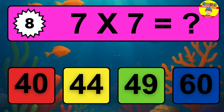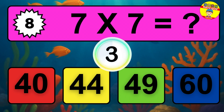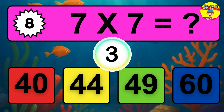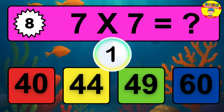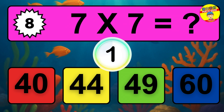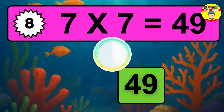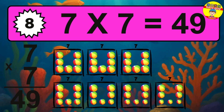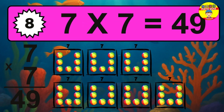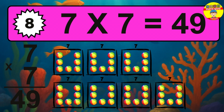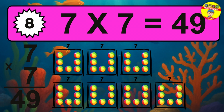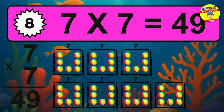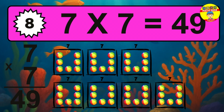Question 8. 7 times 7 equals what? The answer is 7 times 7 is 49. To calculate, we have 7 groups with 7 balls each one. So, how many balls do we have? 49 balls.